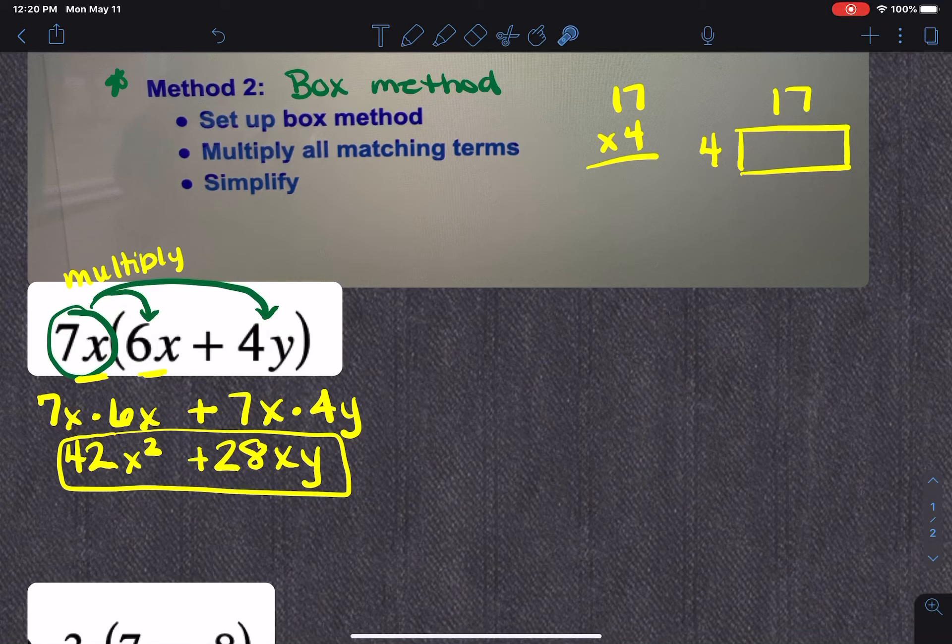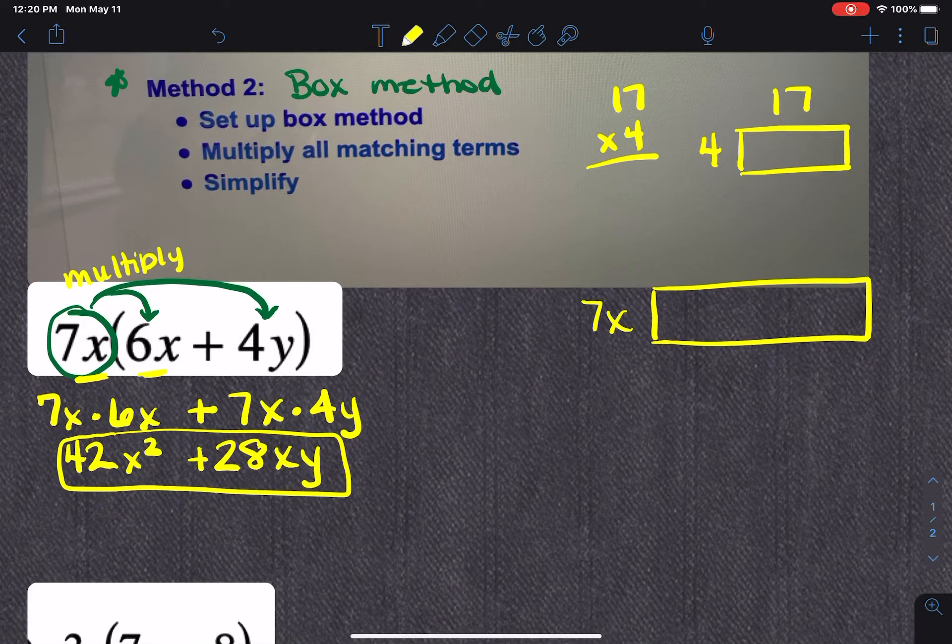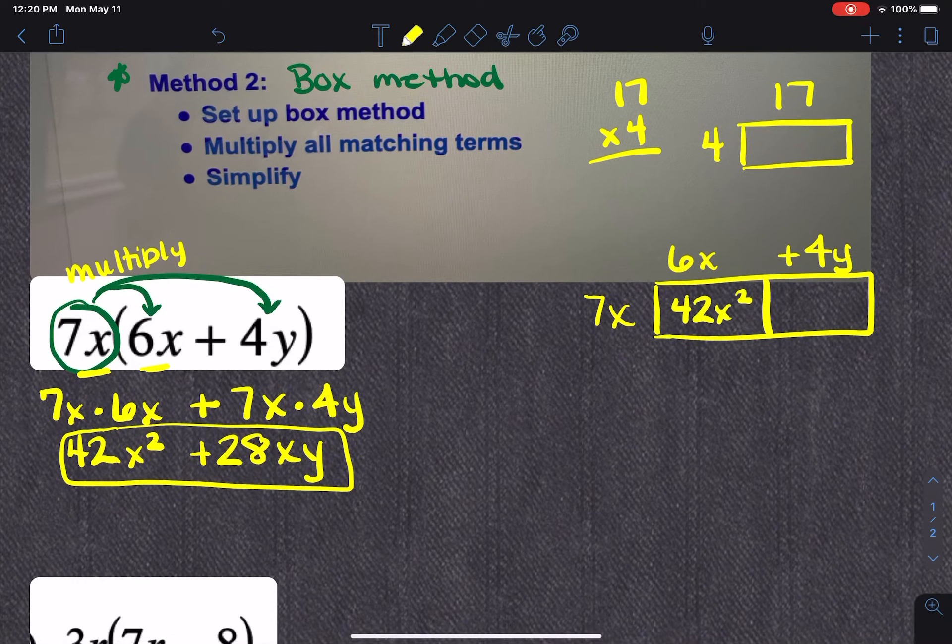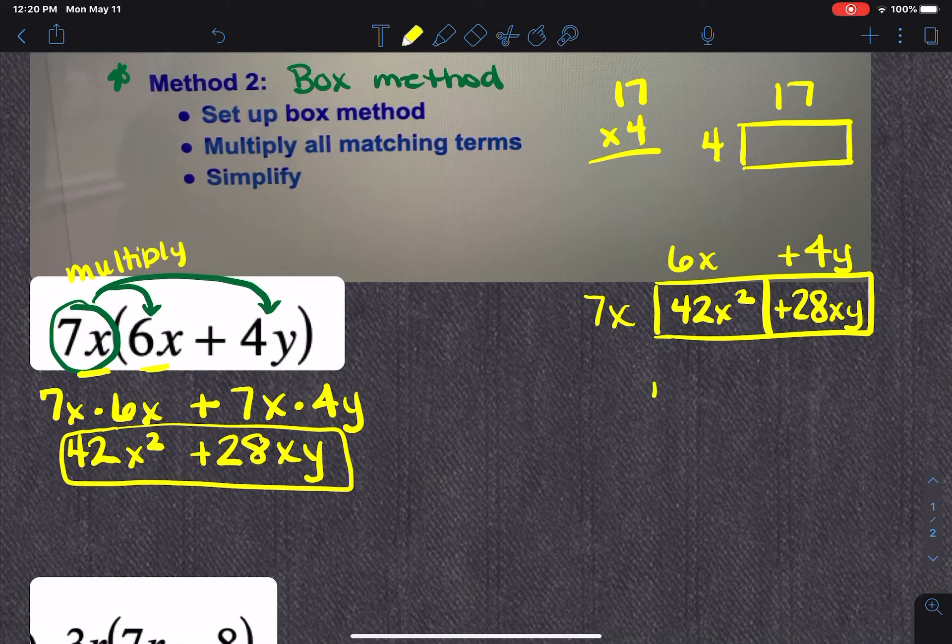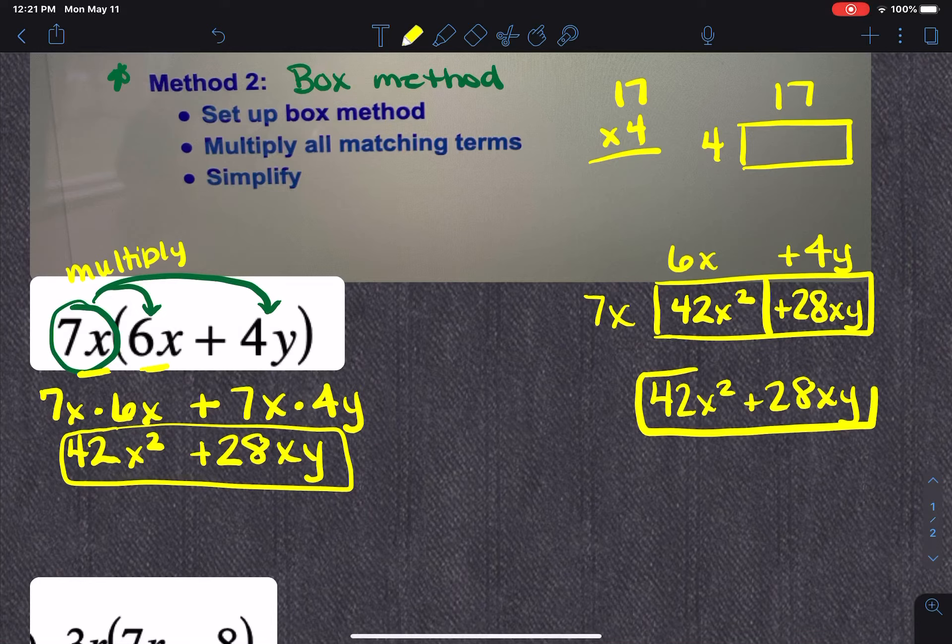So in this problem, 7x has the least amount of terms. So I'm going to put it in the front and I'm going to make my box. This has two terms. So I'm going to put it across the top right here. And because there are two terms, I'm going to make them have their own columns. So now it just becomes about multiplying. So 7x times 6x is 42x squared. 7x times positive 4y is positive 28xy. So then I would just take my two terms and put them together. If I had things to combine, I would. But in this one, I don't.